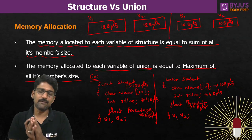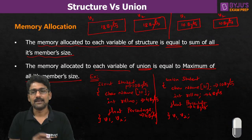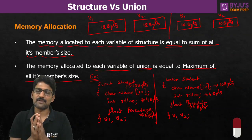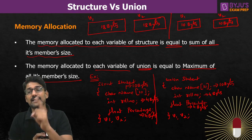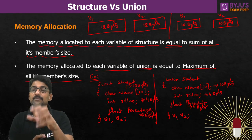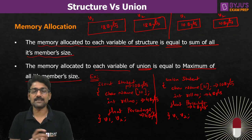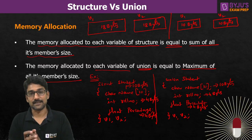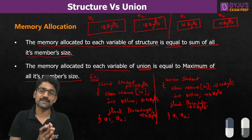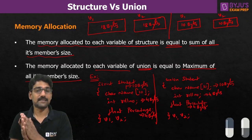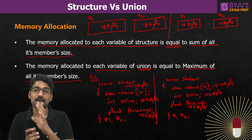Here we get a doubt: when only 10 bytes are allocated for a union variable, how can you store all members' values? That is the reason why only one member can be accessed at a time in a union. But structure members can be accessed simultaneously. This is the second key difference: structure members can be accessed simultaneously, but union members can be accessed only one at a time.